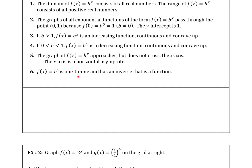Instead of saying one-to-one, we'll say that on a given domain, a function f will have an inverse, or we'll call it invertible, if each output value of the function is mapped from a unique input value. We'll also talk about how if a function has an ordered pair (a, b) on the graph, then its inverse will have the ordered pair (b, a) on the graph. Justification will no longer use words like 'one-to-one' as you may have seen in Algebra 2.